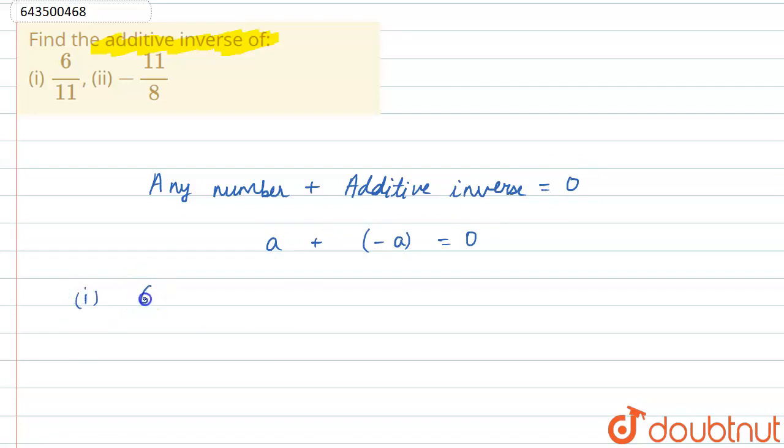So in the first part, the number is 6 by 11. So its additive inverse will be minus of it, so its additive inverse will be minus of 6 by 11.